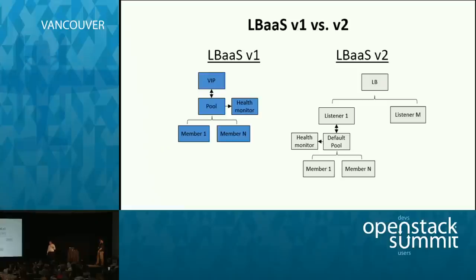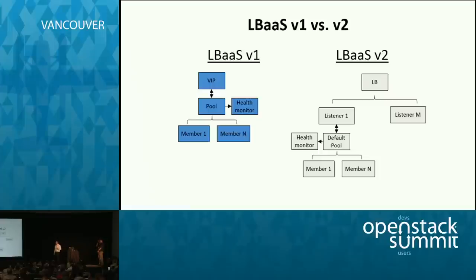The interesting addition is that we are actually looking at doing object sharing, which Brandon will talk about later. This also introduced the notion of a slightly different status object, where all objects like VIP and pool had their own status. On V2, the status is something you pull from the load balancer object, and then you can see the hierarchical status of items inside it. This will be helping us to introduce sharing, probably at Liberty.